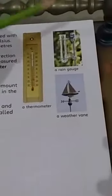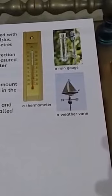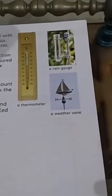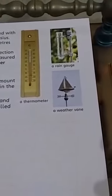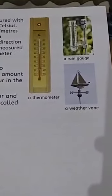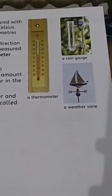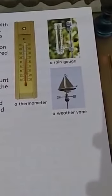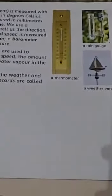We use a rain gauge to measure rainfall in millimeters, and we use a weather vane to tell the direction of the wind. I hope you understand the whole lesson — now close your books.